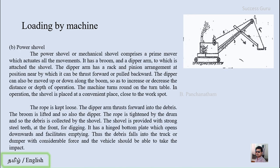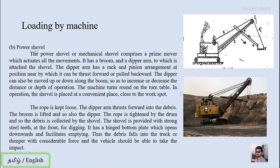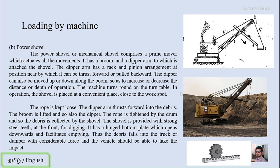Now let's look at the power shovel. This is the sketch of the instrument. The power shovel or mechanical shovel comprises a prime mover which actuates all the movements. It has a boom and a dipper arm to which the shovel is attached. The dipper arm has a rack and pinion arrangement near the base, by which it can be thrusted forward or pulled back.